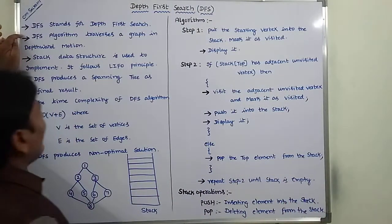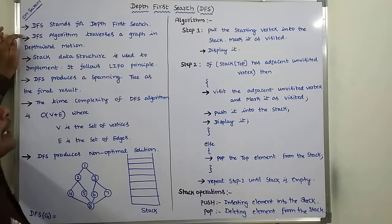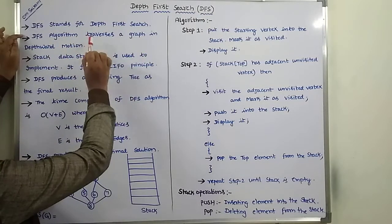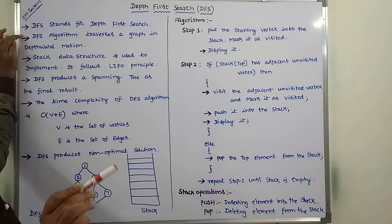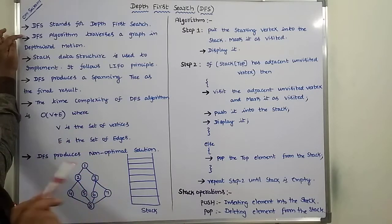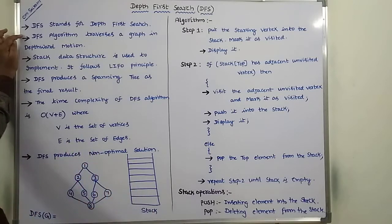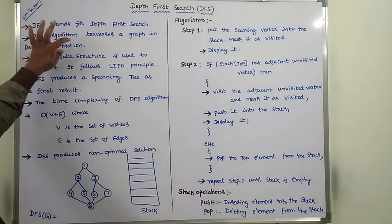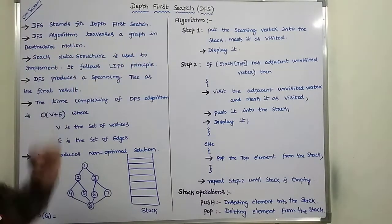DFS algorithm traverses a graph in depth-first motion. Traversing means visiting all the vertices in a graph exactly once. Now, DFS algorithm traverses a graph in depth-first motion.